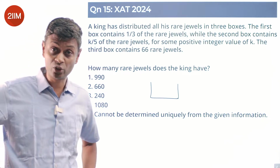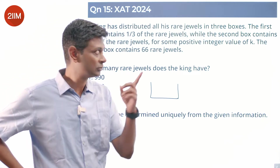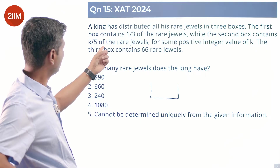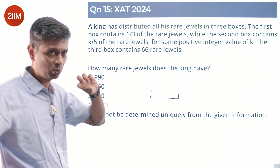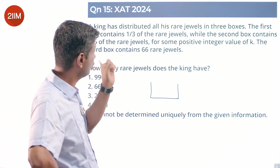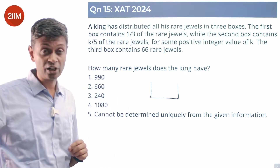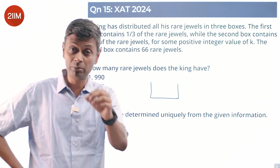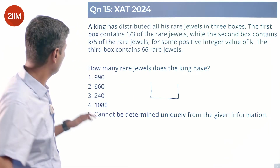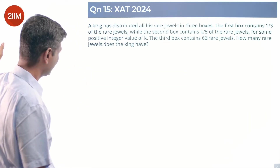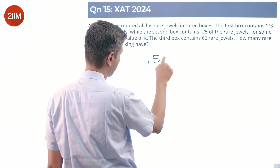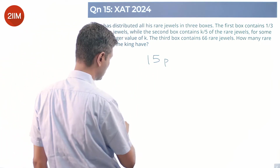The total number of rare jewels must be a multiple of both 3 and 5. The second box contains k by 5 — one-fifth, two-fifths, or three-fifths — it doesn't matter. We know the number of rare jewels has to be a multiple of five, and it's also a multiple of three. So our king has 15p rare jewels.